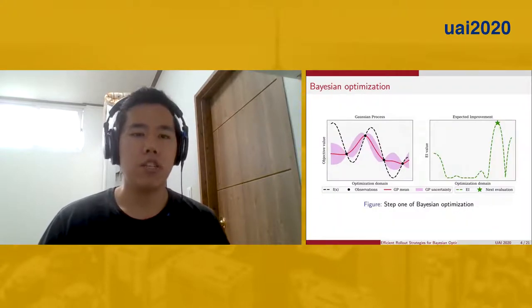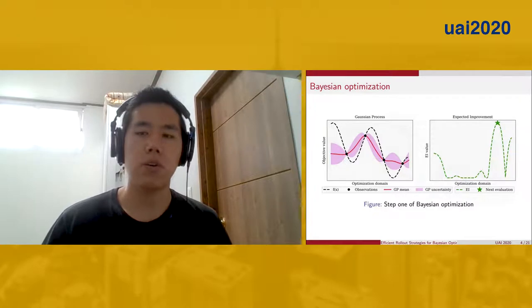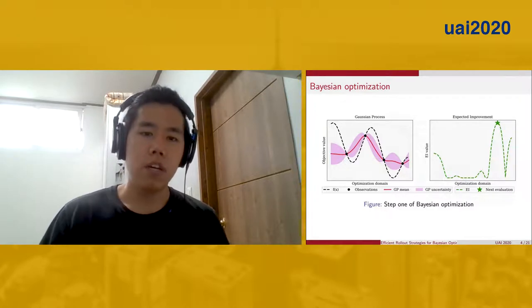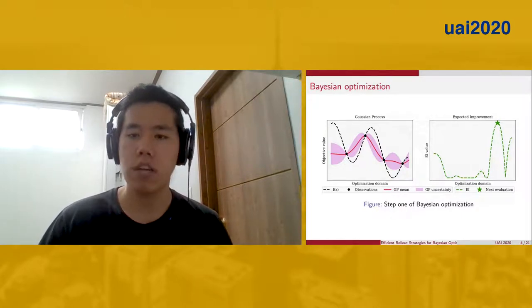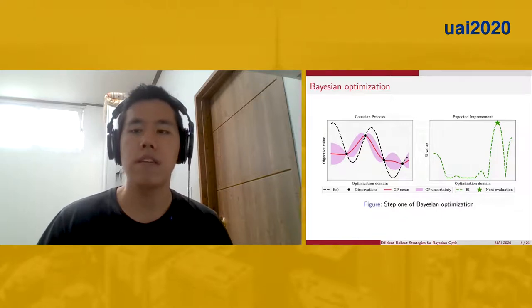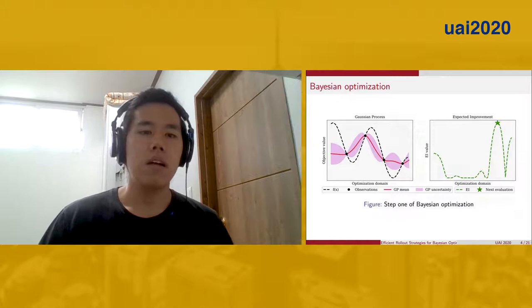Bayesian optimization is a model-driven way of efficiently minimizing these functions. It operates in two parts. First, it builds a stochastic surrogate that models the objective using all prior data. You can see this on the left, and the most common model used is a Gaussian process. The mean and uncertainty given in red and magenta respectively.